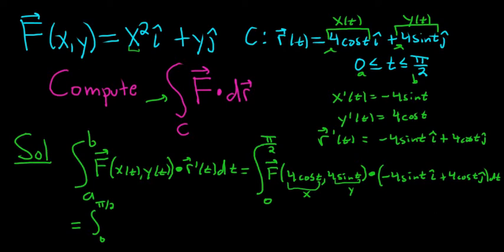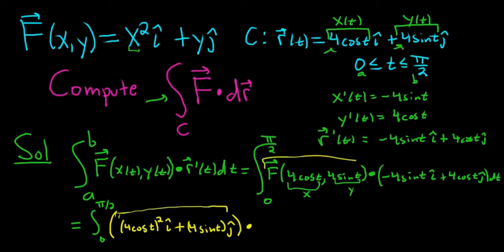So this is the definite integral from 0 to pi over 2. And then we have x squared, so it will be 4 cosine t squared i hat plus 4 sine t j hat dot. So all of this is just this piece here. We just took the 4 cosine t and put it where the x was. We took the 4 sine t, we put it where the y was. Dot all of this stuff over here, so negative 4 sine t i hat. It's really easy to mess up in these problems, so just be careful. A lot of notation. Once you get through the notation, it's not so bad.